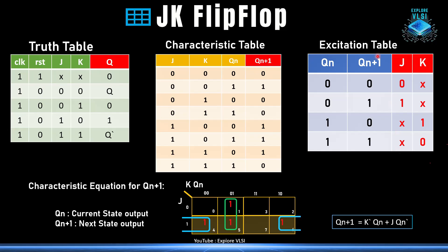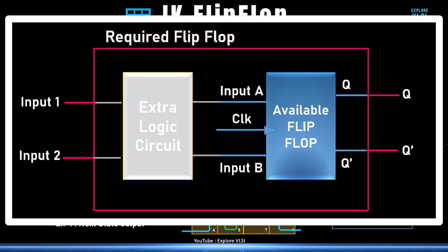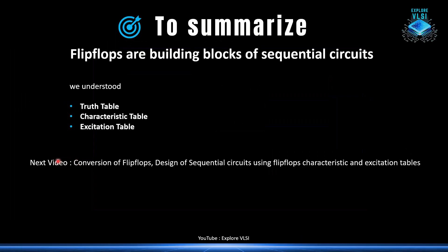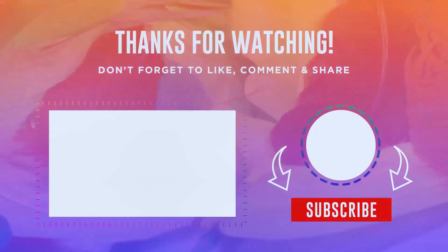You may wonder where excitation tables and characteristic tables are actually used. In the next video, we will see how to use these tables in constructing complex circuits — for example, how to convert an SR flip-flop into a JK flip-flop by using the characteristic table and excitation table. We will also design sequential circuits using flip-flops by utilizing characteristic equations, characteristic tables, and excitation tables.